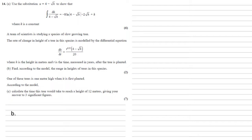As we're looking for a range, we want maximum and minimum if they exist, so we're going to set dh by dt equal to 0. So we've got t to the power of 0.25 times 4 minus root h all over 20 equals 0.